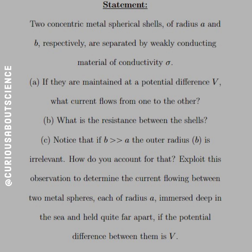So our first question here states: two concentric metal spherical shells of radius A and B respectively are separated by weakly conducting material of conductivity sigma. Part A: If they are maintained at a potential difference V, what current flows from one to another? Part B: What is the resistance between the shells?